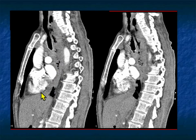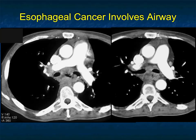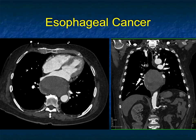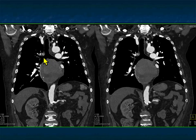Esophageal cancers can extend for short distances, particularly adenocarcinoma at the GE junction, though squamous cell and adenocarcinoma can both be longer. Another case: patients may present with coughing because of the fistula. You may wonder if it's a lung cancer involving the esophagus secondarily. TE fistulas can also occur after radiation therapy or occasionally chemotherapy. This is a large ulcerating esophageal cancer involving the left main stem bronchus. Another example shows a very unusual bulky tumor splaying the trachea and main stem bronchi.